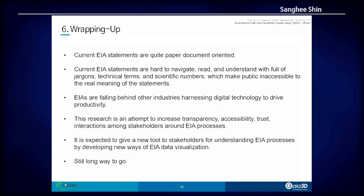Wrapping up: current EIS statements are quite paper-oriented, so we need to change the paradigm. The current EIS statements are hard to navigate, read, and understand — full of jargons, technical terms, and scientific numbers — which makes the public inaccessible to the real meaning of the statements. There are lots of things we need to do and there is still a long way to go, but this will be the start of our new research for the interactive EIA process. Thank you so much.